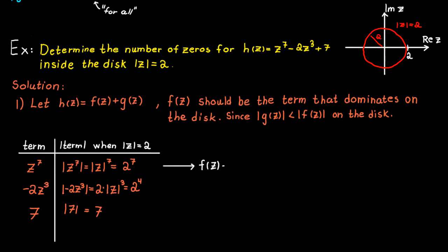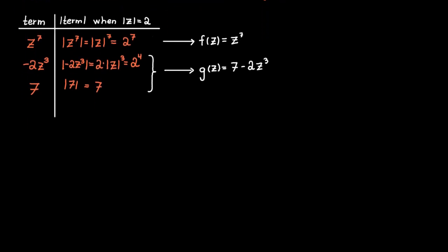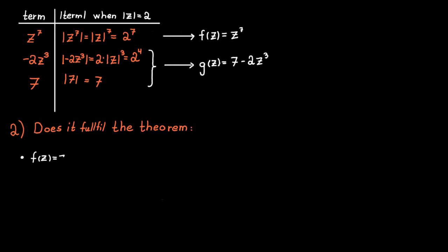Therefore, z to the power of 7 is going to make up our function f, and the rest of the terms are going to make up our function g. The next step is to check that these two functions fulfill the theorem. First, we check that both are analytic — which they indeed are, since they don't have any singularities inside or on the disk.